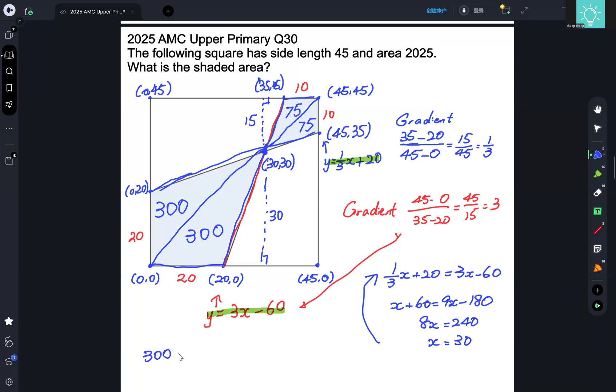So to calculate the total area, we just add up the areas of our four triangles. 300 plus 300 plus 75 plus 75, and we get to a total of 750, which is our final answer.